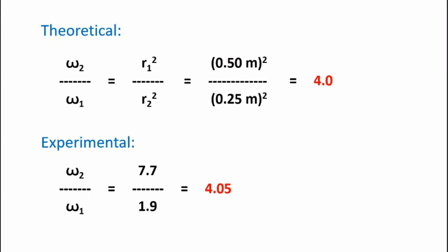Now let's compare theory with our experiment. The theoretical analysis indicated that omega-2 over omega-1 would be 4.0. And as we just saw from our experiments, our omega-2 over omega-1 experimental is 4.05. So that shows good agreements once we came up with a valid experiment.